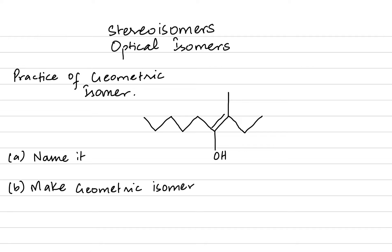In order to name it, we will find the longest carbon chain. We could number it from left or right. Since the double bond is closer towards the right side, I would recommend numbering from the right side.